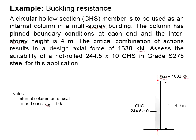Let us try an example to check for the buckling resistance of a member. A circular hollow section member is to be used as an internal column in a multi-story building. The columns are pinned at each end, the inter-story height is 4m, and the critical combination of actions results in a design pressure force of 1630 kN. Assess the suitability of the provided circular hollow sections 244.5 x 10 in grade S275.